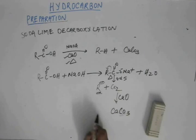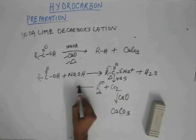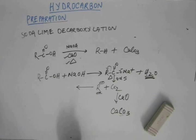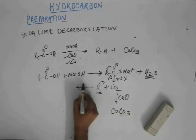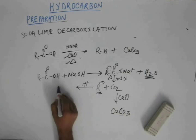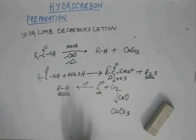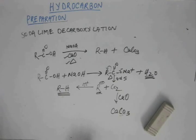Now we don't have CO2, the reaction cannot go backward, and R minus is highly unstable and cannot remain as it is. So it has to react with something, and that something is water, which will always be present — even in ethanol solvent, water is never completely absent, and moisture will always be there. This R minus will abstract a hydrogen from water and become R-H, which is the alkane. This is the organic product we are interested in, and this completes the mechanism of the reaction.